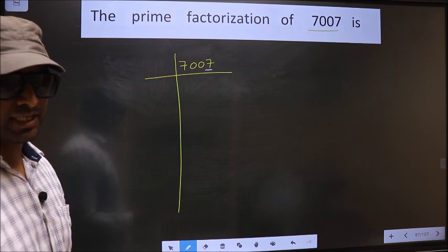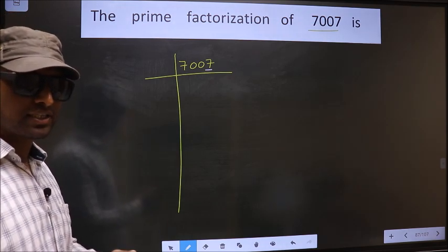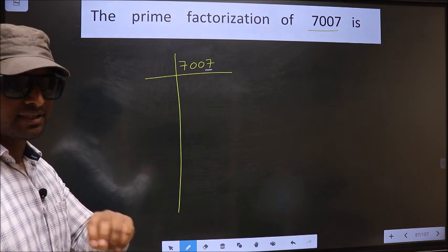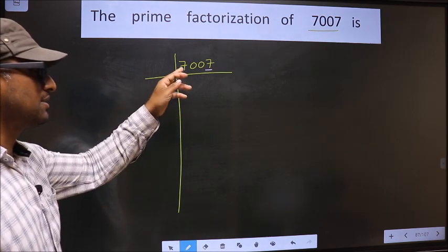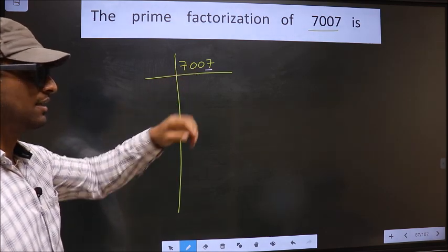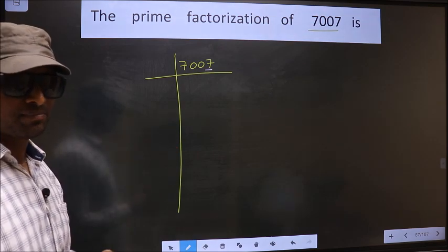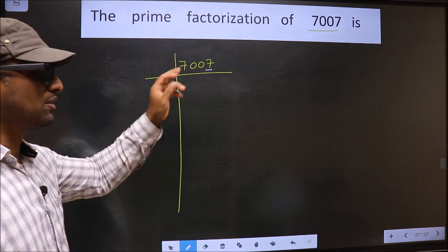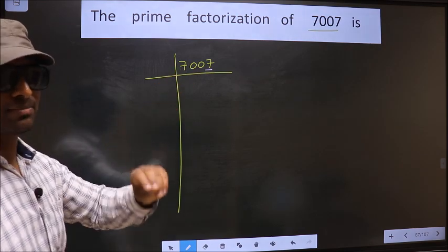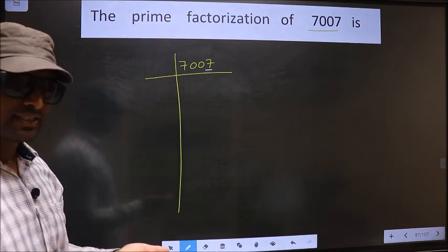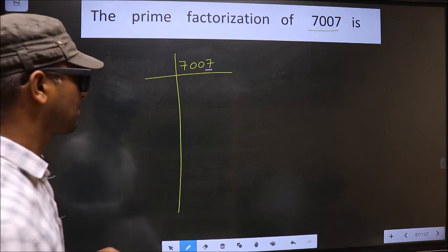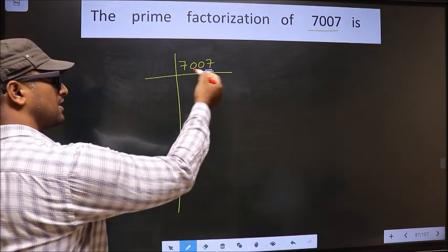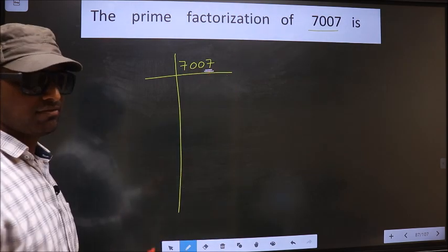Next, prime number 3. To check divisibility by 3, we should add the digits — that is 7 plus 0 plus 0 plus 7, we get 14. 14 is not divisible by 3, so this number is also not divisible by 3. Next, prime number 5. The last digit is neither 0 nor 5, so this number is not divisible by 5.